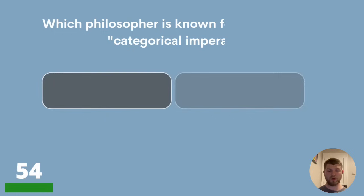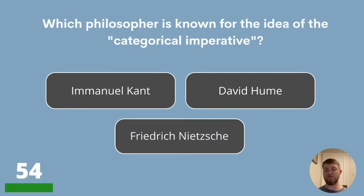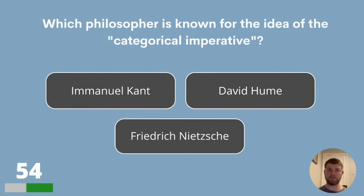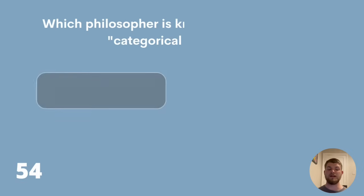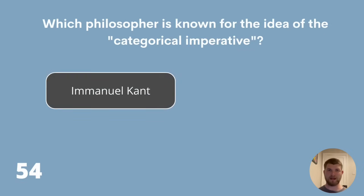Question 54. Which philosopher is known for the idea of the categorical imperative? Immanuel Kant, David Hume or Friedrich Nietzsche? The answer is Immanuel Kant.